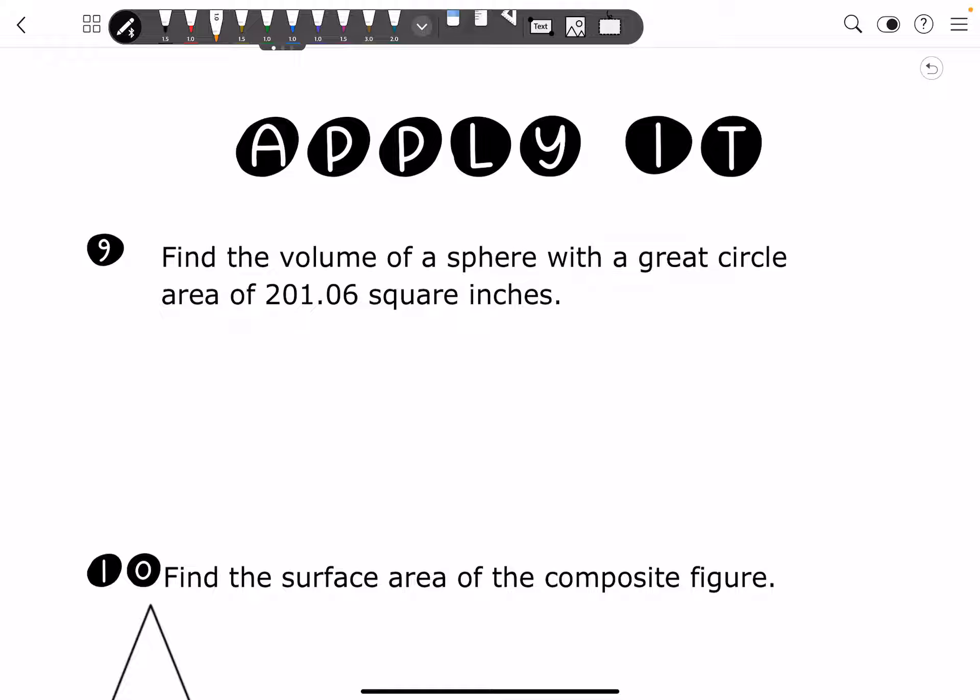So in this one, they haven't given us the radius, but what they have given us is the great circle. And they've given us the area of it. So I want to remind you that you find the area of a circle by pi R squared. And they've told us that it's 201.06 as the area is equal to pi R squared.